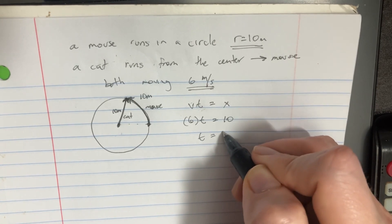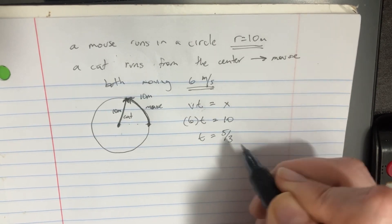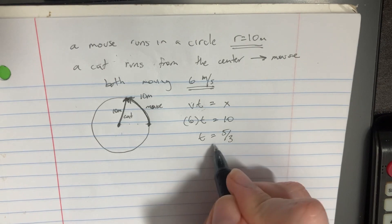So we can say that 10 is going to be equal to like 5 over 3. And yeah, so that's basically the answer.